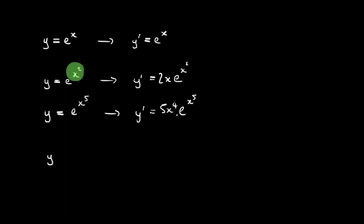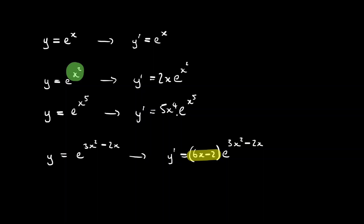Let's try some slightly more complicated examples. Let's say we've got e to the power of 3x squared minus 2x. The basic function remains unchanged, so we still have e to the power of 3x squared minus 2x, but if we differentiate the power we get 6x minus 2. Notice that I've put everything in brackets — because if I'd written 6x minus 2 times e to the power of 3x squared minus 2x without brackets, that means only the 2 multiplies the exponential, not the 6x. So we must remember to include brackets.